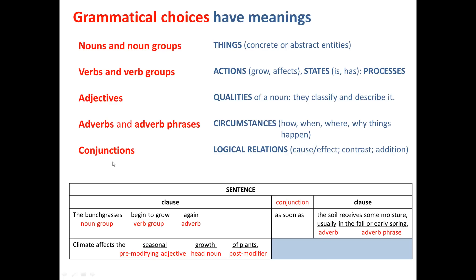Finally, we have conjunctions, which we've mentioned several times. Conjunctions talk about logical relationships between ideas, especially between clauses — the cause-effect relationship, the contrasting relationship, relationship of time such as 'as soon as,' or relationship of addition with 'and,' and so forth. The important point about grammatical terms is that they have meanings attached to each of them.